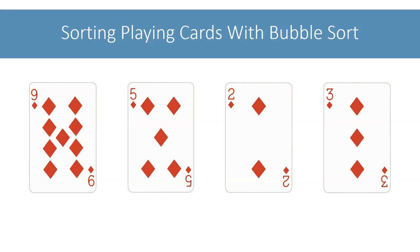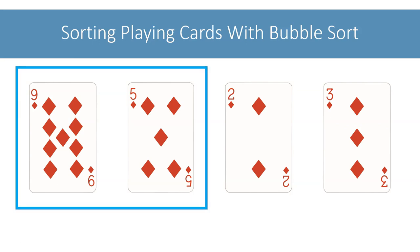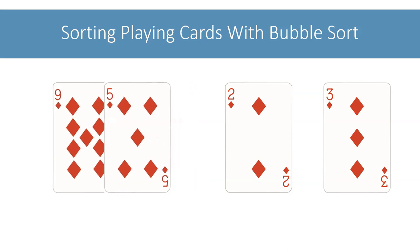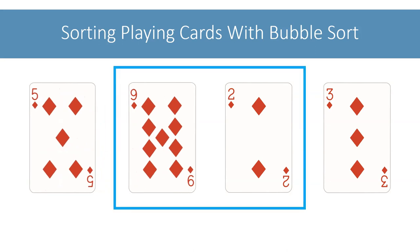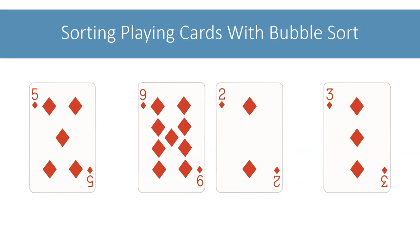To sort these cards using bubble sort, we will compare the first two cards. As the first card 9 is greater than the second card 5, they are in wrong order. We need to arrange these cards in ascending order, so we will swap them. Next, we will compare 9 with 2. As the cards are in wrong order, we will swap them.